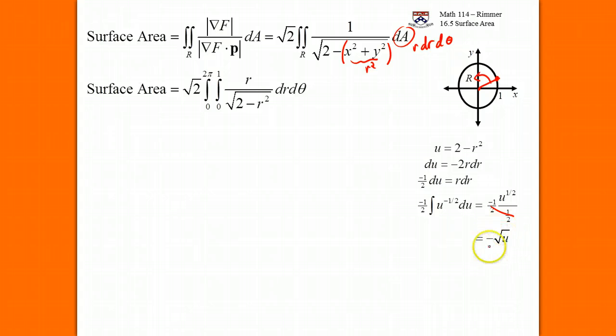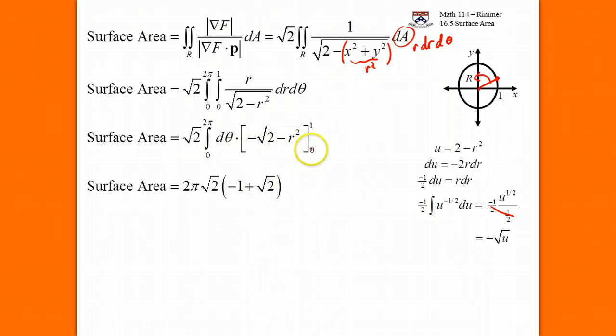All right, what do we do with this negative root u? This is now going to be plugged back in for r. We'll have negative the square root of 2 minus r squared evaluated from 0 to 1. There's no thetas involved, so what we can do is do a separation here. And we'll have the integral from 0 to 2 pi on d theta times this fundamental theorem of calculus evaluation. When we put a 1 in, we're going to get root 1, so negative 1. When we put a 0 in, we're going to get root 2, but minus a negative will be a plus. This guy right here is just our 2 pi. The root 2 is still out there. So this would be our answer.